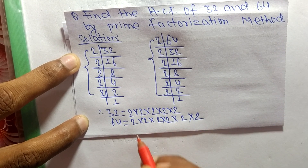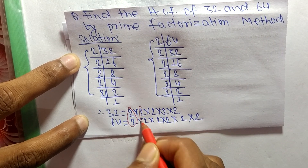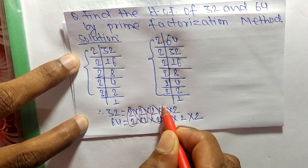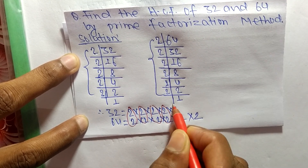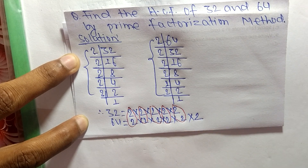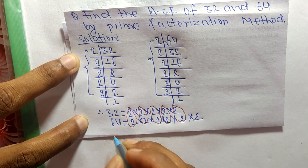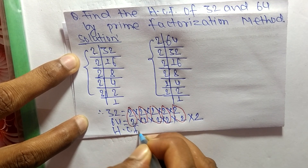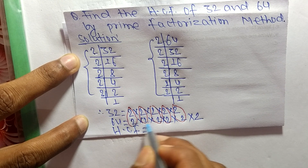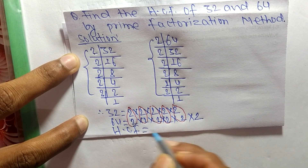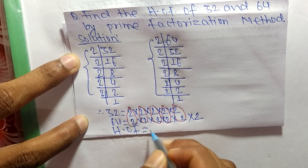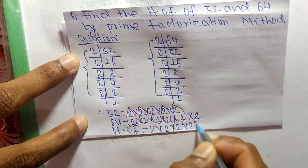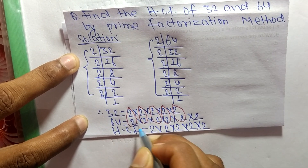The common factors here are 2, 2, 2, 2, and 2. So we can write HCF is equal to the product of common factors, that is 2 × 2 × 2 × 2 × 2.